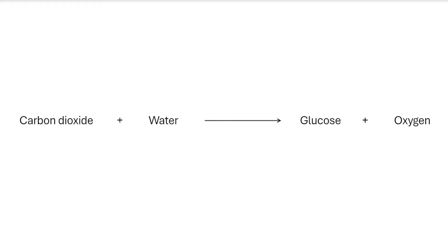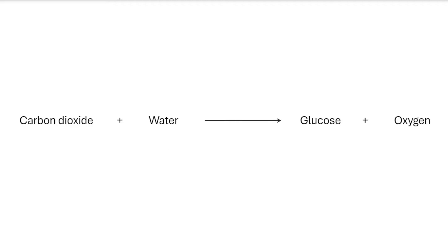Let's start with looking at the equation. This is the word equation for photosynthesis: carbon dioxide reacting with water, and in the plant cells it can turn into glucose and oxygen. You will need to know the symbol or formula for glucose which is C6H12O6. If you're doing combined you will need to just be able to recognize the formula for glucose. If you're doing separate you will also need to know the balanced symbol equation: 6CO2 plus 6H2O make C6H12O6 and 6O2.